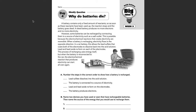This is possible because the electrochemical reactions that create electricity are reversible. When a battery is recharging, electricity flows in the opposite direction. In a car battery, this allows lead sulfate that coats both of the electrodes to dissolve back into the acid solution. Lead and lead oxide reform on each of the electrodes. This process of recharging uses energy in itself. But when the battery is reconnected to the car, the electrochemical reaction that produces electricity can start all over again.